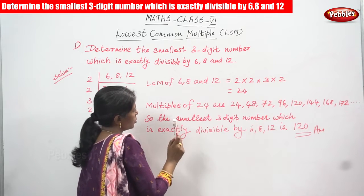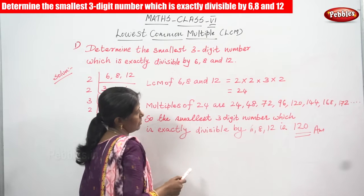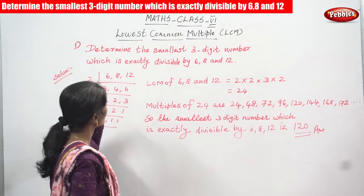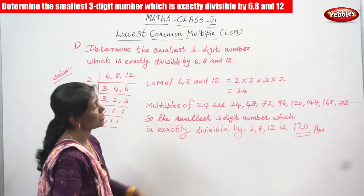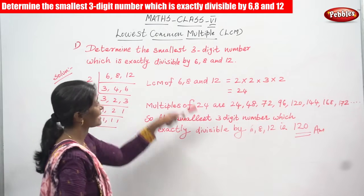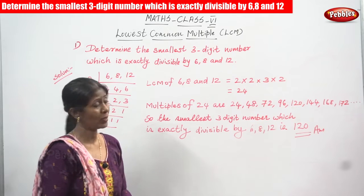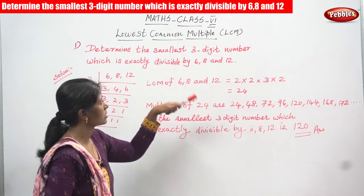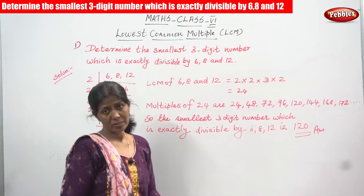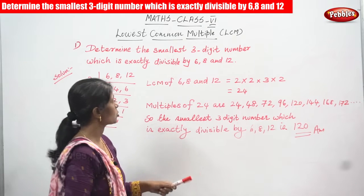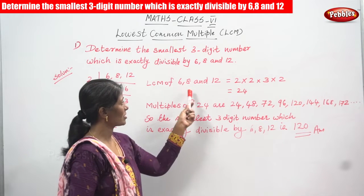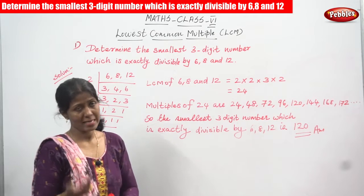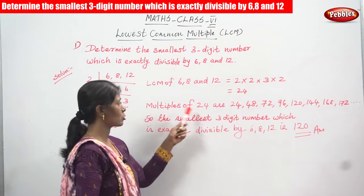Now we have to write the multiples of 24. We need to find the smallest 3-digit number which is exactly divisible by 6, 8, and 12. Since the LCM of 6, 8, and 12 is 24, the second step is to list the multiples of 24.